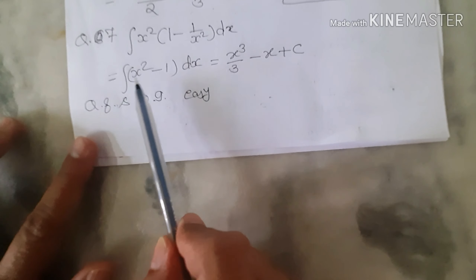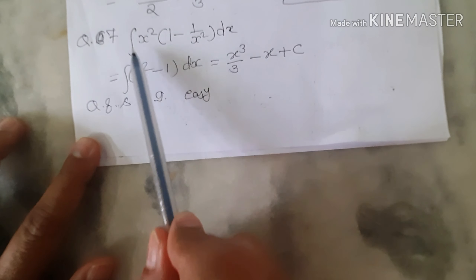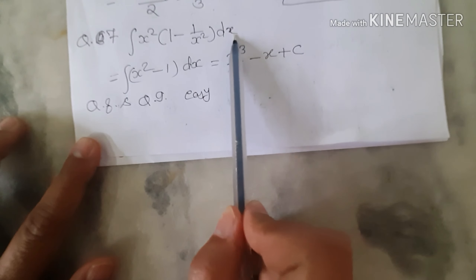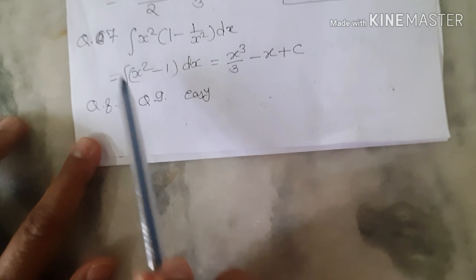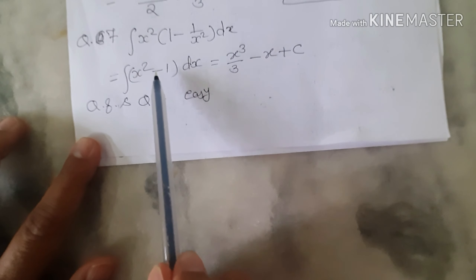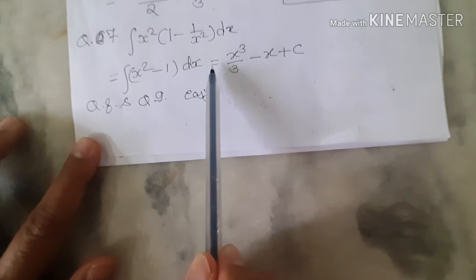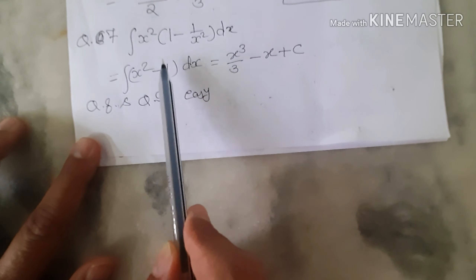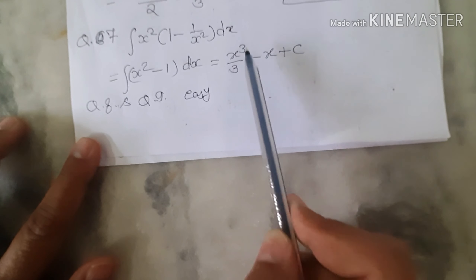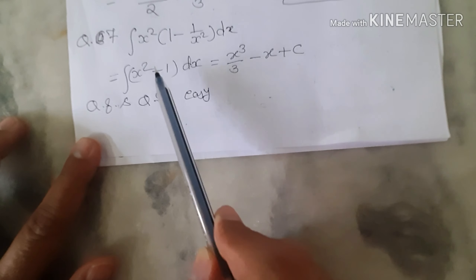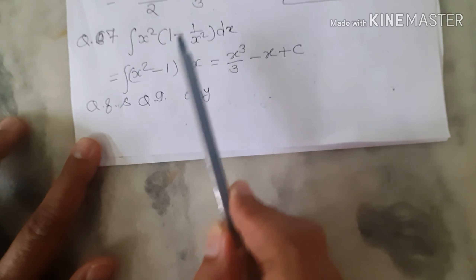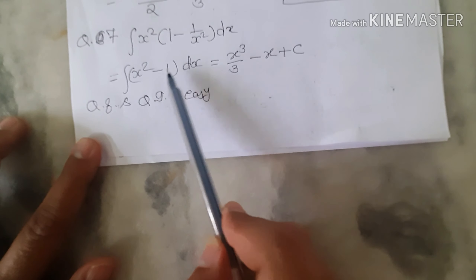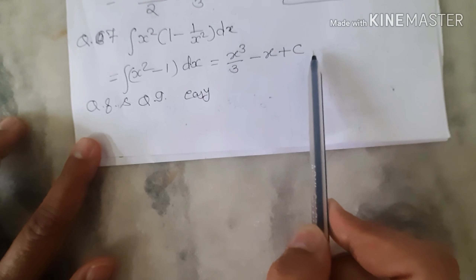Question 7: integral of x²(1 - 1/x²) dx. Multiplying out gives integral of (x² - 1) dx. Integral of x² is x³/3, and integral of -1 is -x. So the answer is x³/3 - x + c.